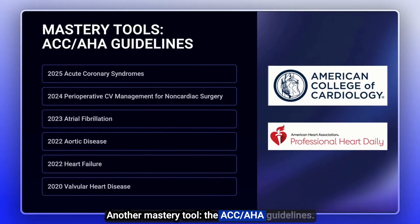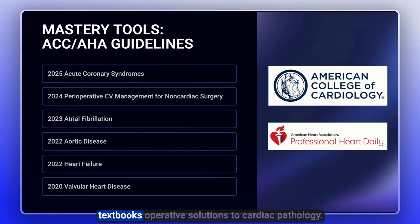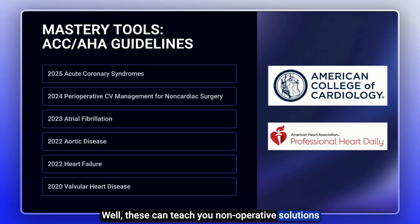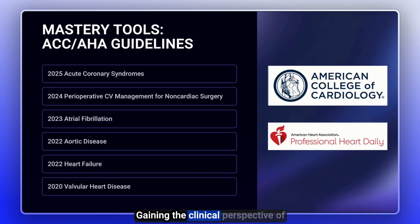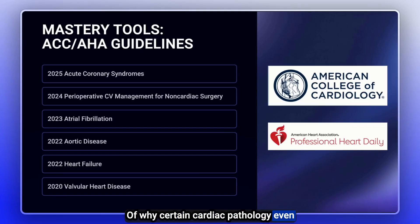Another mastery tool is the ACC AHA guidelines. You've learned operative solutions to cardiac pathology from the cardiac surgery textbooks — these guidelines teach you non-operative solutions and when certain pathology would even be indicated for surgery. Gaining the clinical perspective of why a severe valve even matters, of why certain cardiac pathology matters in the perioperative setting — these are all excellent papers to read.